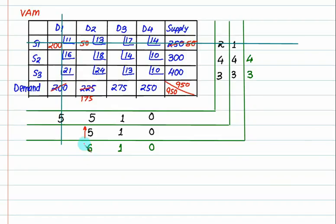Maximum penalty is 6. Minimum cost is identified. Requirement is 175, available quantity is 300. Can we give all 175? Yes. Left is 125. The column is cancelled out.